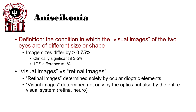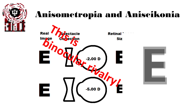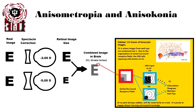Regarding visual images versus retinal images: the retinal image is determined solely by the ocular dioptric elements. The visual image, however, is determined not only by the optics, but also by the entire visual system. In anisometropia, the more minus lens will minify the image, creating a smaller image on the retina. When this image reaches the brain, there is a difference in size between the two eyes, and the brain must process how to combine them — a process called binocular rivalry, taking place in the V1 striate cortex.